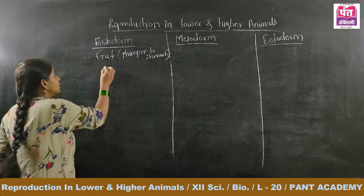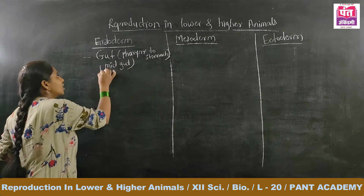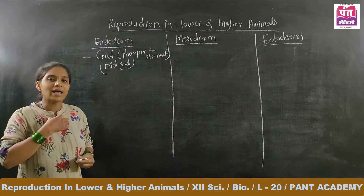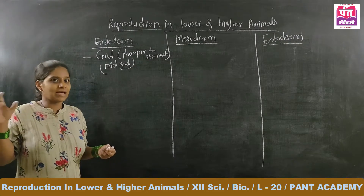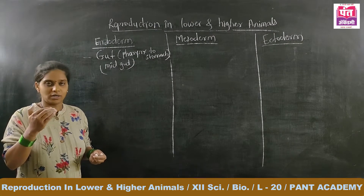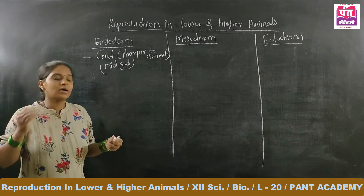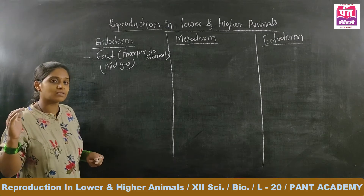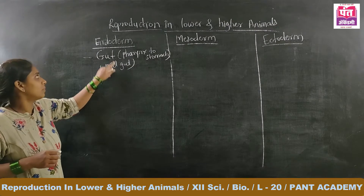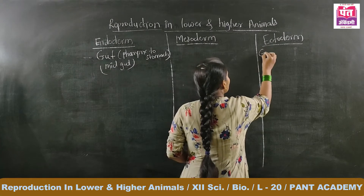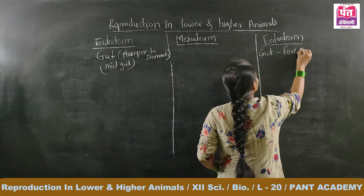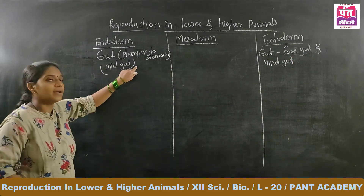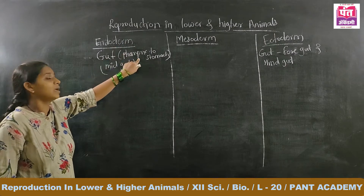The midgut — that is, from pharynx to the intestine — is made up of endoderm. The pharynx, esophagus, and stomach up to the intestine constitute the midgut. From the large intestine up to the anus, that is termed the hindgut. Mouth to the pharynx is the foregut, and small intestine to large intestine up to the anus is the hindgut. So the midgut portion of the digestive system is made up of endoderm, while the foregut and hindgut are made up of ectoderm.